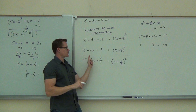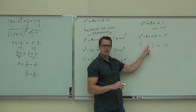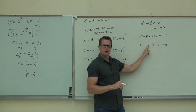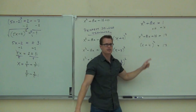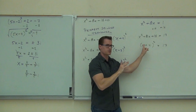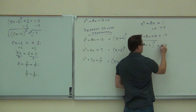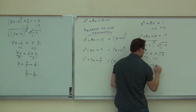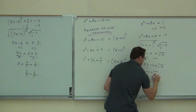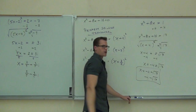Now that left side is a perfect square trinomial, so you factor it: x plus 4 squared equals 17. That's exactly what we've been doing all along — something squared equals a number. Take a square root of both sides with plus or minus: x plus 4 equals plus or minus root 17. Subtract 4: x equals negative 4 plus or minus root 17. Two solutions: negative 4 plus root 17 and negative 4 minus root 17.